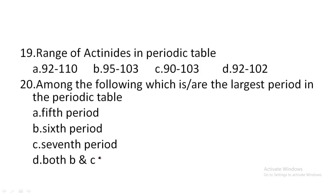Next: the range of actinoids in the periodic table — option A: 92 to 110, option B: 95 to 103, option C: 90 to 103, option D: 92 to 102. The range of actinoids is 90 to 103. Option C is the correct answer.